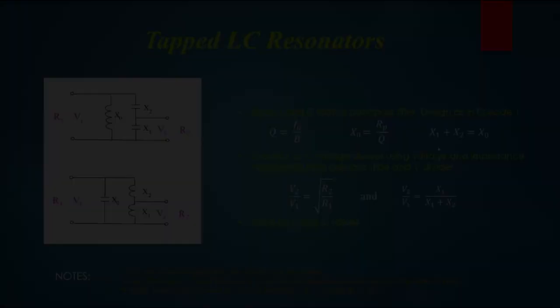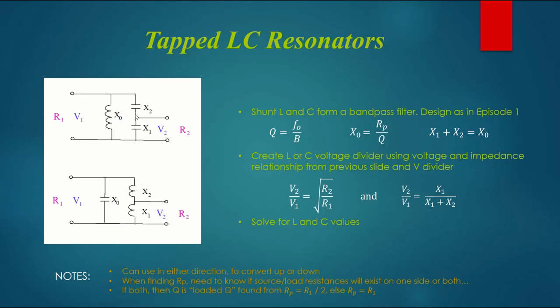We can use the previous formula to determine the ratio of R2 to R1 during the impedance match. To be a resonator, X1 in series with X2, or X1 plus X2, needs to equal X0. Once we know that total, we can use the voltage divider equation and the relationship between voltage and impedance transformation to solve for the independent X1 and X2 values. This network generally works well, provided you shoot for a quality factor Q around 3 or 5 or more.